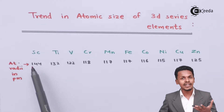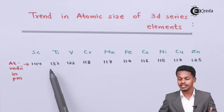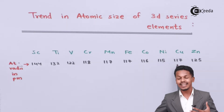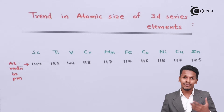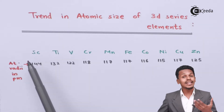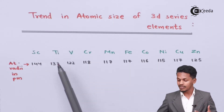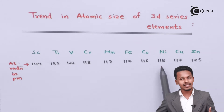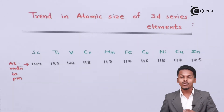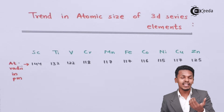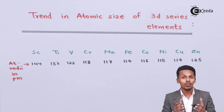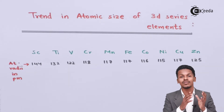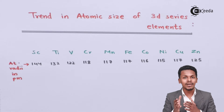So for scandium, one electron enters the d orbital; for titanium, two; vanadium, three; chromium, four; manganese, five; iron, six; cobalt, seven; nickel, eight; copper, nine; and zinc, ten. These extra electrons entering the d orbital play a vital role in the concept known as the shielding effect.